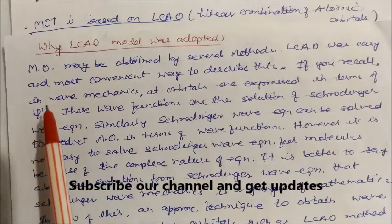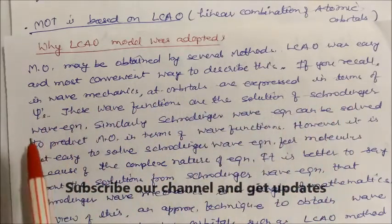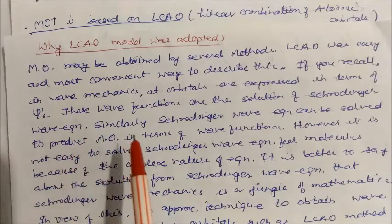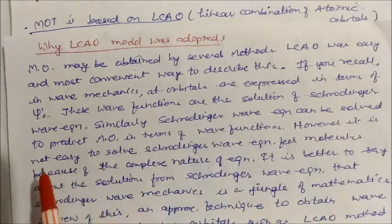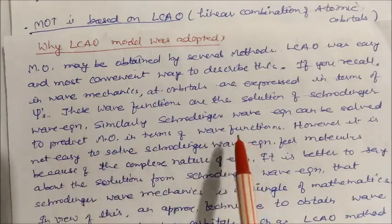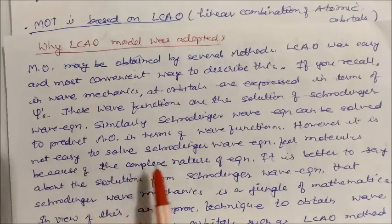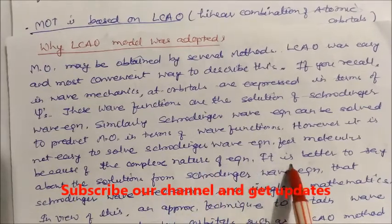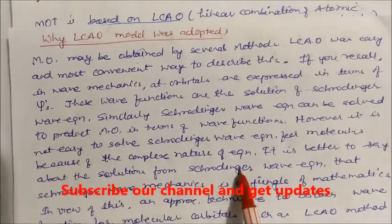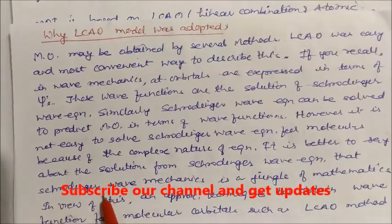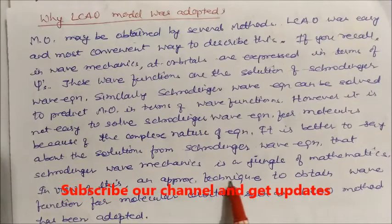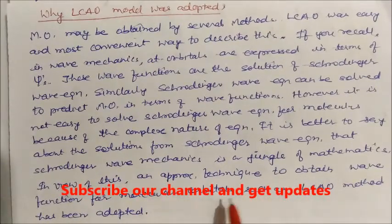If you recall in wave mechanics, atomic orbitals are expressed in terms of wave functions, and these wave functions are solutions of the Schrödinger wave equation. Similarly, Schrödinger wave equations can be solved to predict molecular orbitals in terms of wave functions. However, it is not easy to solve the Schrödinger wave equation for molecules because of the complex nature of the equation — Schrödinger wave mechanics is a jungle of mathematics. So, approximate techniques to obtain wave functions for molecular orbitals, such as the LCAO method, have been adopted.